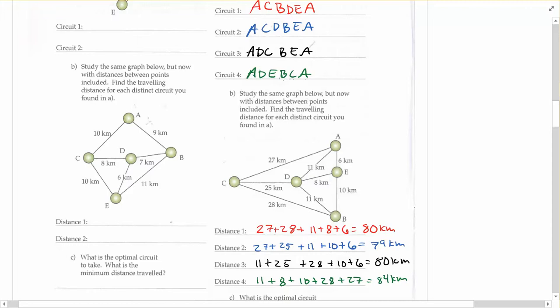Okay, so now that I've written down what all those distances are, I was just looking for the distance, for instance, between A and C. It was 27, so I wrote it down, wrote down all the distances, add them up. So you can see for each circuit how far the distance this traveling sales person would have to travel.